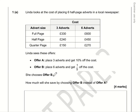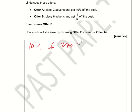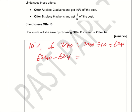She chooses Offer B — how much does she save compared to Offer A? She's placing six half-page adverts. Offer A: place three adverts and get 10% off. 10% of £240 is 240 divided by 10 = £24. So £240 minus £24 = £216 for three adverts.